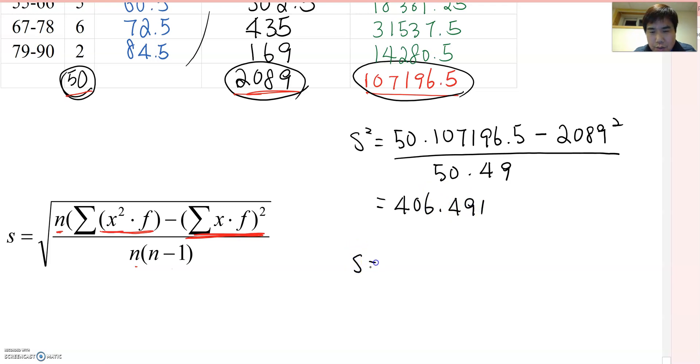And the standard deviation, which means square root of the variance. So square root of 406.491, then you will get about 20.162 like this.